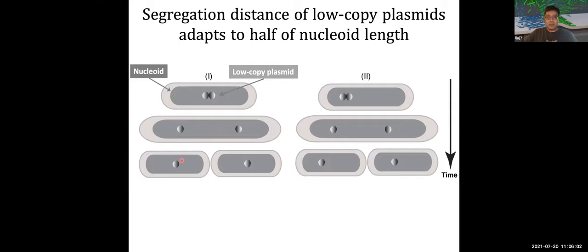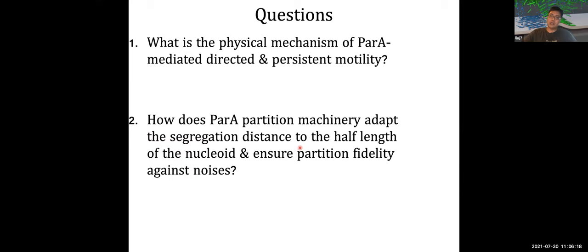The question is: the plasmid is typically 100 nanometers in size, while the nucleoid is typically several microns. How does the plasmid know the size of the nucleoid? Fundamentally, the questions are: what is the physical mechanism of the ParA-mediated directed motility, and how does the partition machinery adapt the segregation distance to half the length of the nucleoid, while at the same time ensuring partition fidelity against noise?